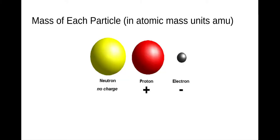If we talk about the mass of each particle, we have a new unit called an atomic mass unit, abbreviated AMU. Subatomic particles are really, really small, so using grams to measure their mass just doesn't really make sense.